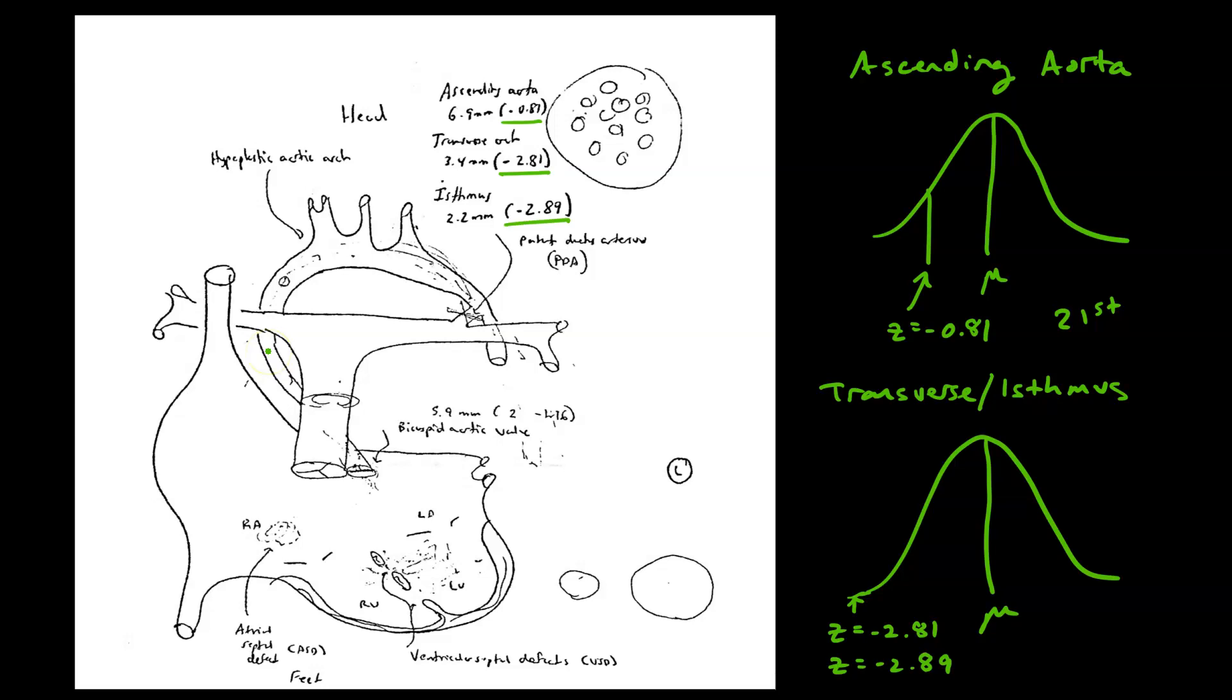But when we got to the transverse and the descending aorta, look at those z-scores. Those z-scores were really similar to each other: negative 2.81 and negative 2.89. Those are close to negative 3, so she was almost three standard deviations below the mean.